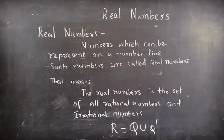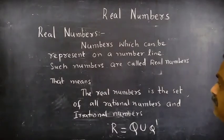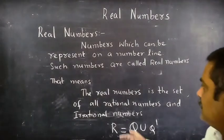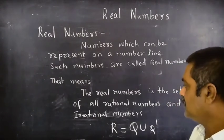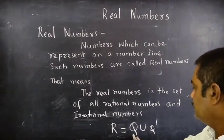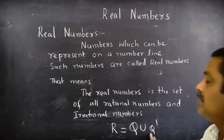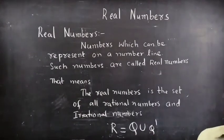Real numbers: numbers which can be represented on a number line are called real numbers. The real numbers is the set of all rational numbers and irrational numbers. R = Rational numbers ∪ Irrational numbers.